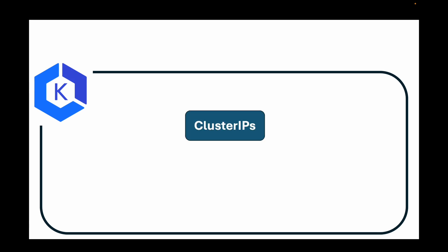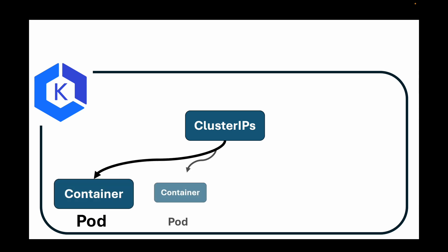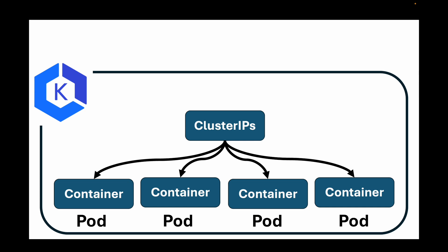ClusterIP is the default service type. If you don't specify what type of service you want to create, ClusterIP is what gets created. With this setting, your service is assigned an IP address that is only reachable within the cluster. If you have microservices that should only receive or serve internal traffic, you can use ClusterIP. Users won't be able to access the pods from a browser outside the cluster — traffic is limited to within the cluster.